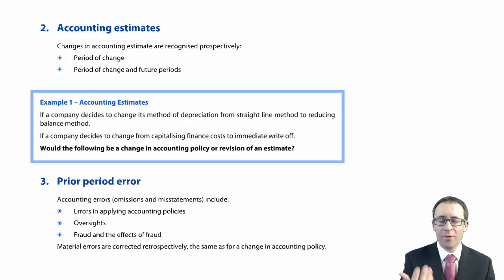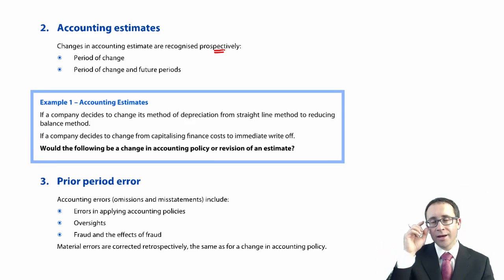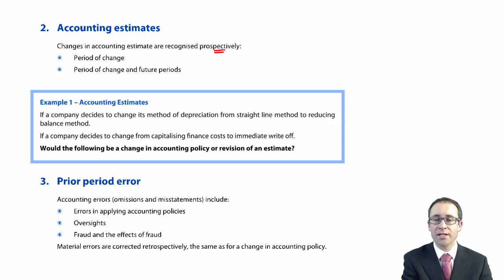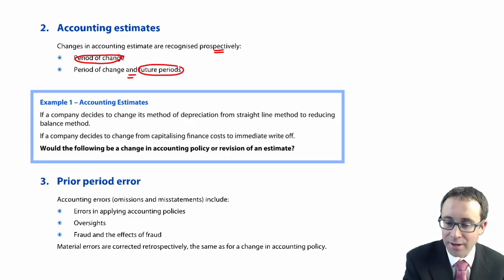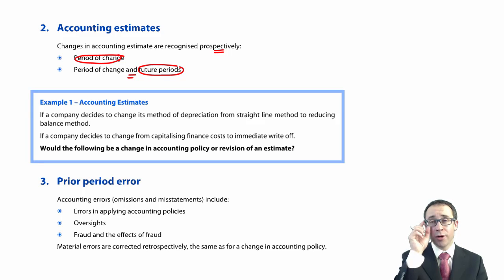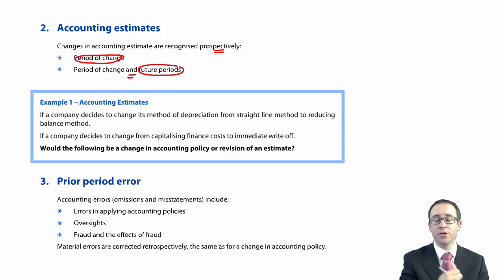Changes in accounting estimates are recognized prospectively. We do not go back and restate the opening retained earnings in the statement of changes in equity. If there is a change in estimates, you update it in the period of change or in the period of change and future periods. With depreciation, if you change from straight line to reducing balance, you take the carrying value at the date of change, apply the new estimate going forward this year and into future periods. You do not restate anything from prior year periods.